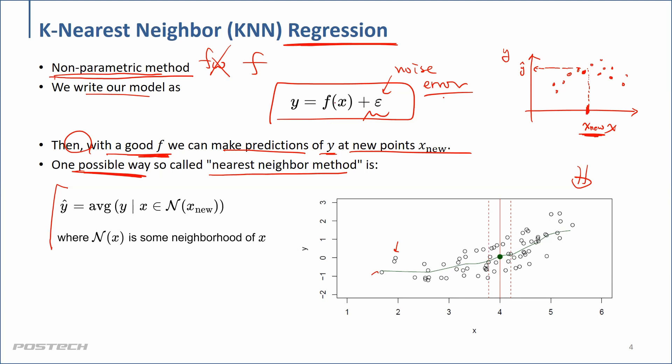But if you just pick the nearest one, that data point might have some noise on it. So instead of picking just one, we can pick k nearest-neighborhood data points — say k equals 3 — and take the mean or average of their labels. That would give good predictions.